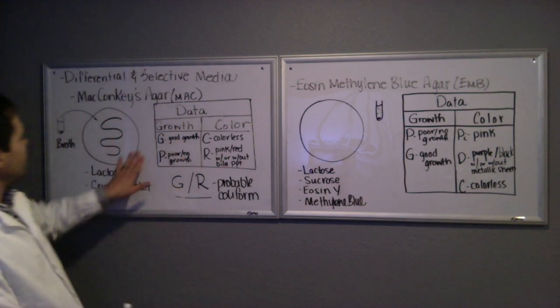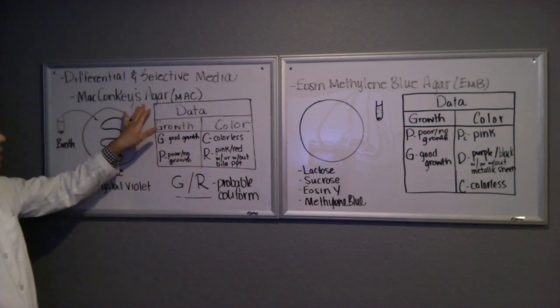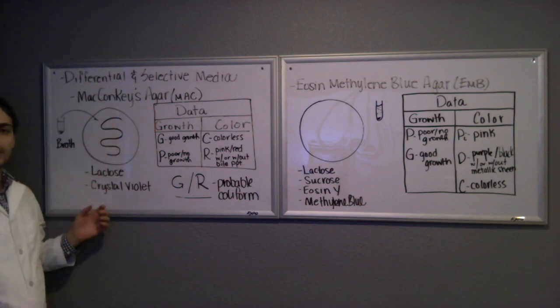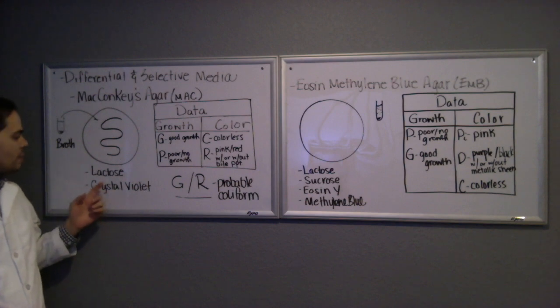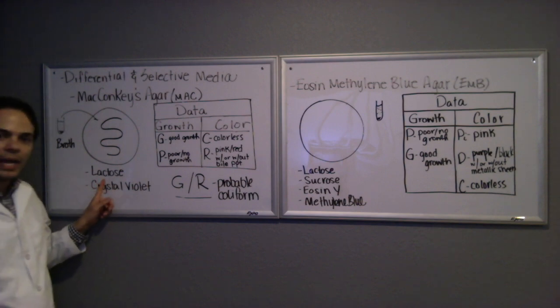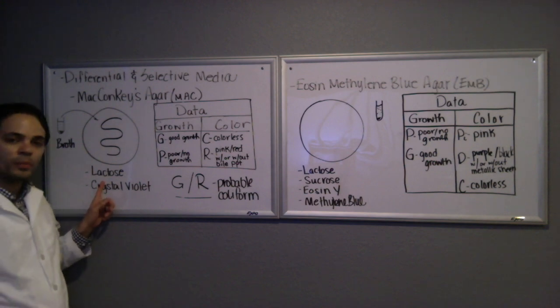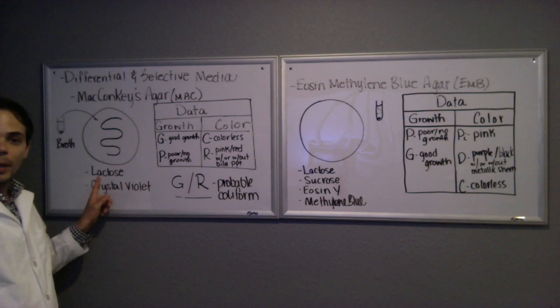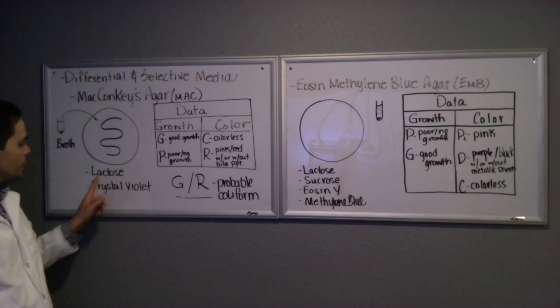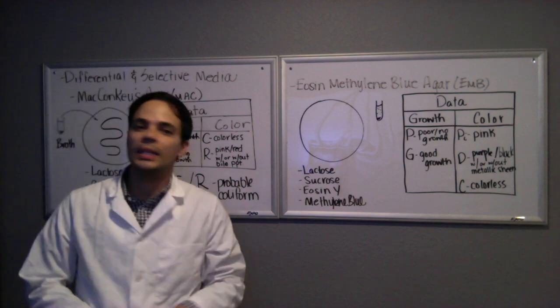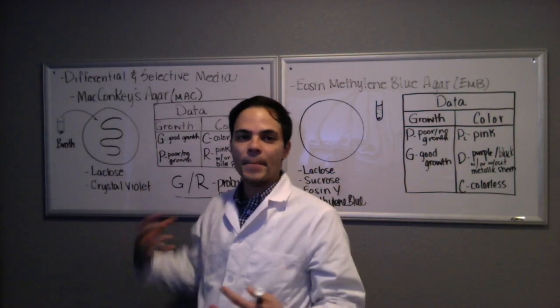The first medium I'd like to discuss is McConkey's agar, and it is both a differential and selective medium. It is going to contain lactose as its differential agent, which is a sugar, and coliforms should ferment lactose. When lactose is fermented, it produces acidic byproducts and that will turn this media a pink color.